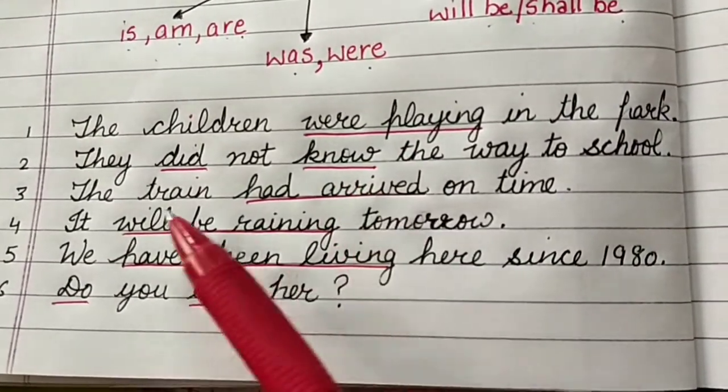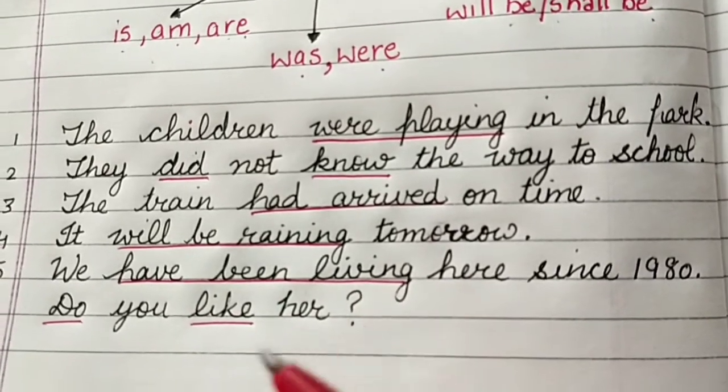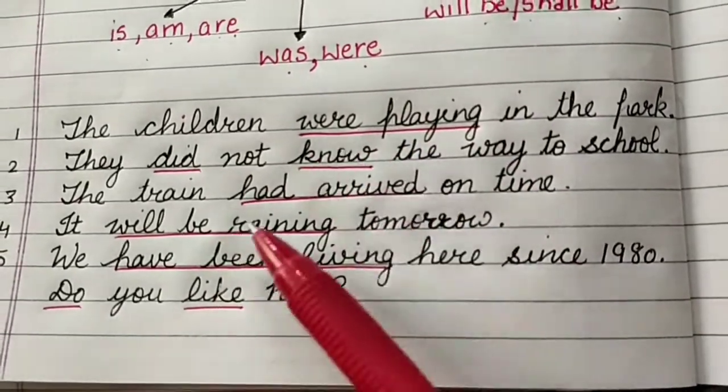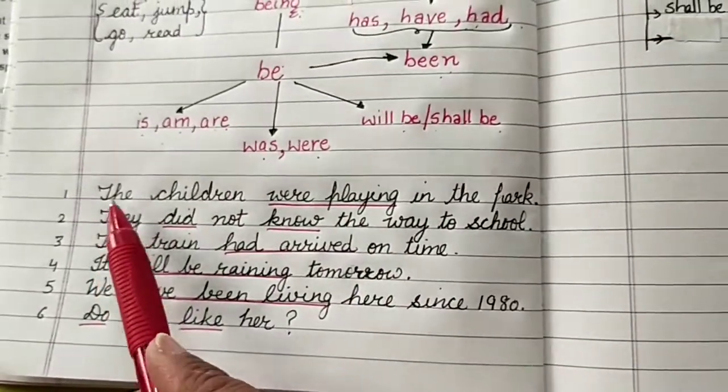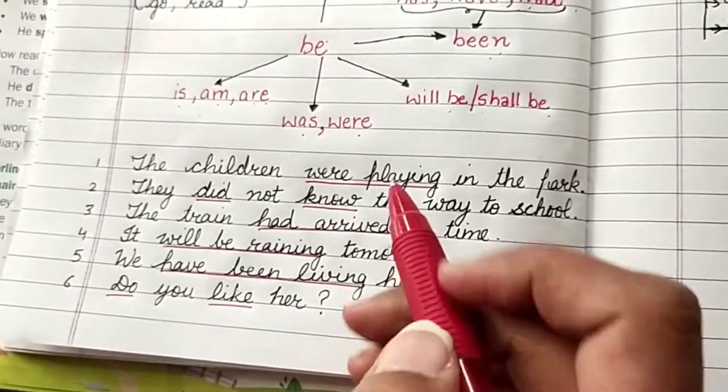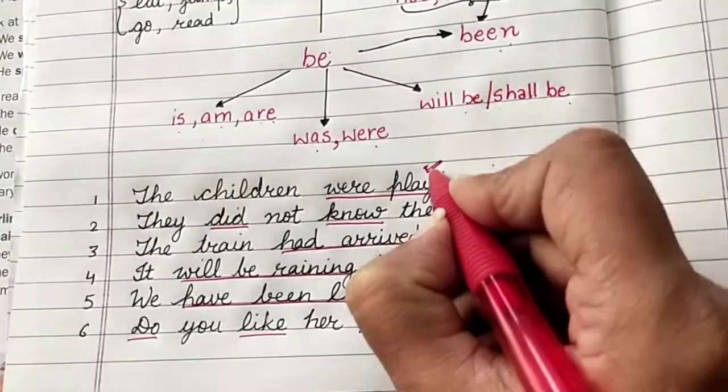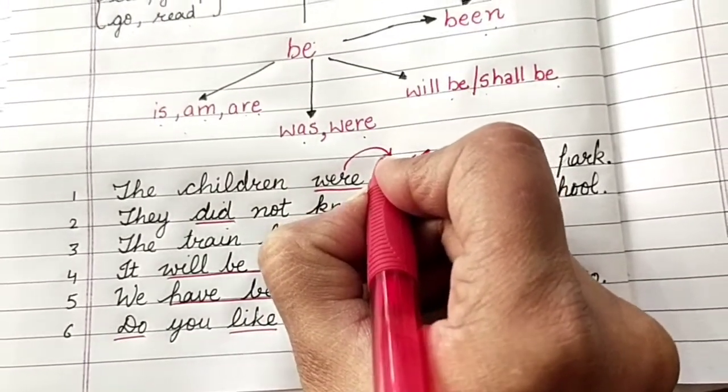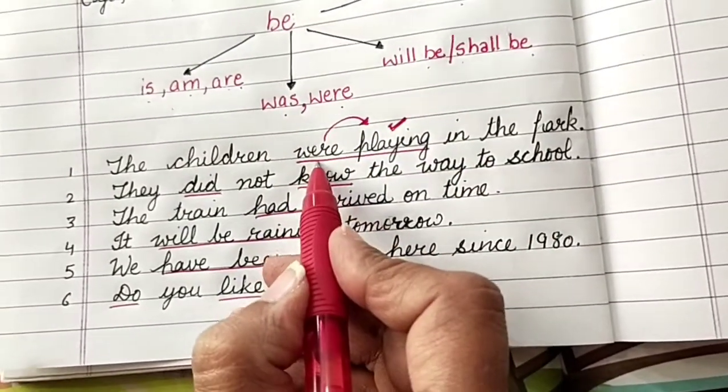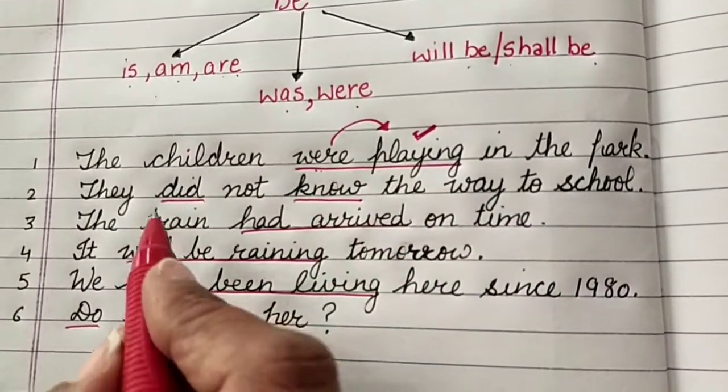Now in all these sentences, if I look carefully, whatever I have underlined in red are the verbs. But are all these verbs the same action words? No. The children were playing. So what's the main action? The main action of the children is playing. They are playing. But this verb is working as a helper to the main verb.